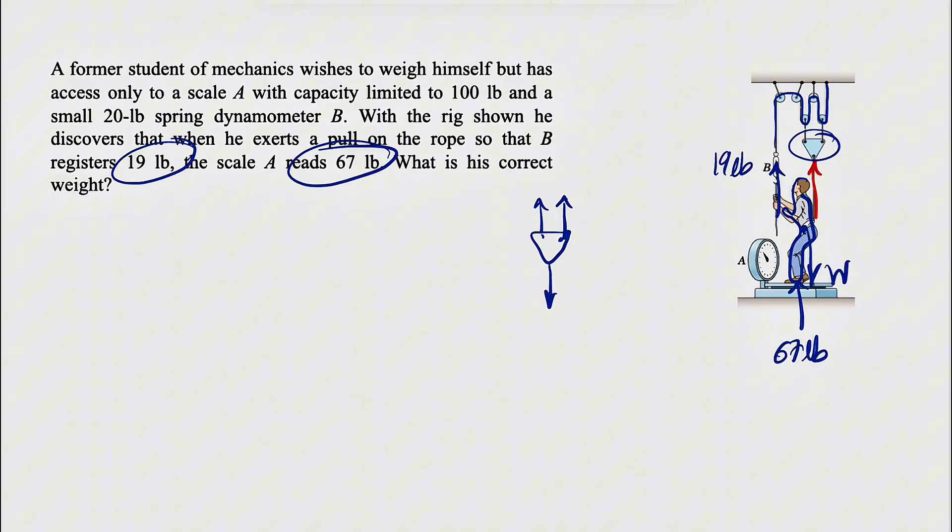two cables and we have this tension, call it T, the T that we're looking for. We also have two pulleys on top of this triangle part which are attached to the 19 lb force on each side. To find the tension